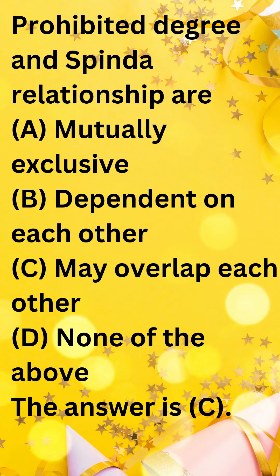Prohibited Degree and Sapinda Relationship are two different concepts, but they may overlap each other. Prohibited Degree refers to the closeness of relationship between two people that makes their marriage illegal. This is defined in the Hindu Marriage Act, 1955. For example, a person cannot marry their parent, sibling, child, grandchild, etc.